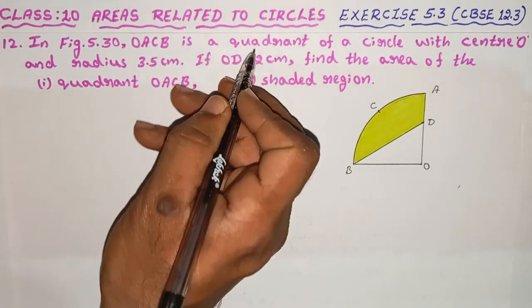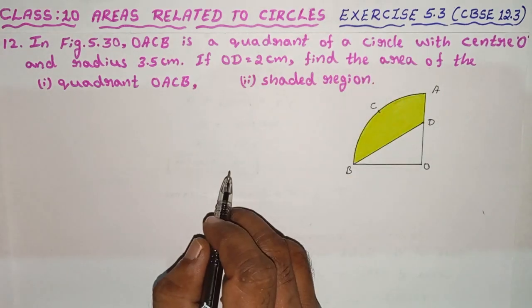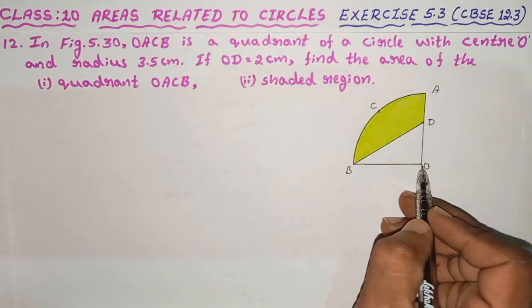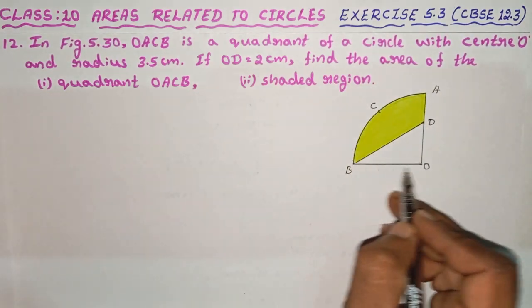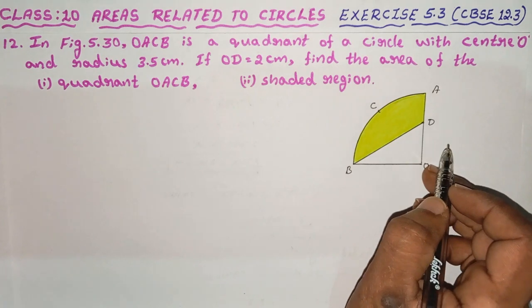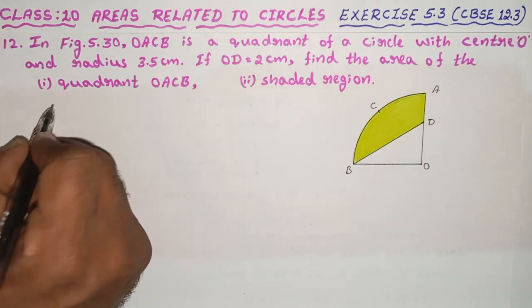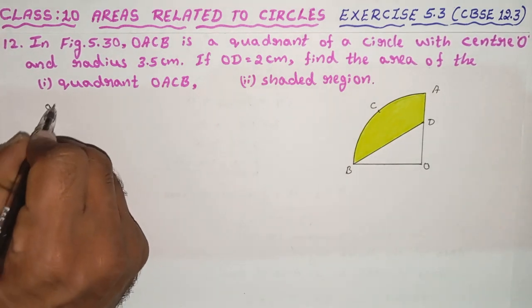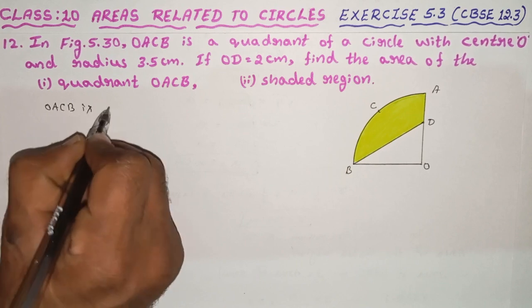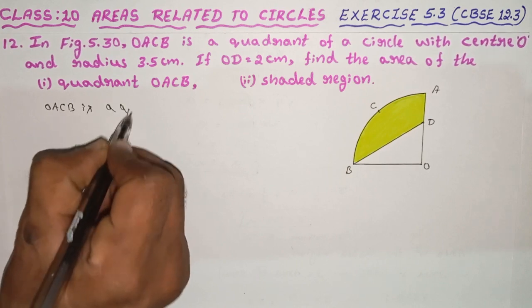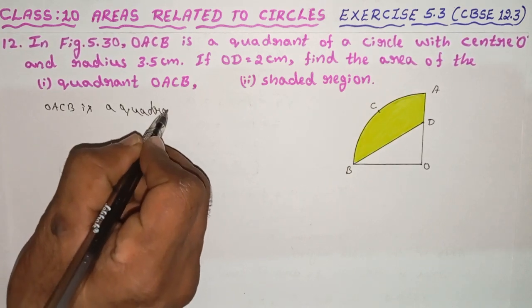OACB is a quadrant of a circle. OACB is a quadrant — this is our given figure for the problem.